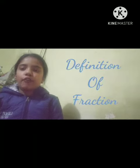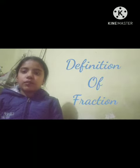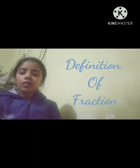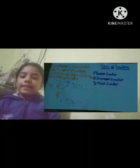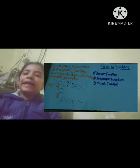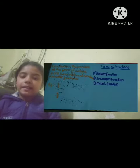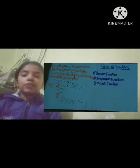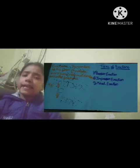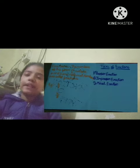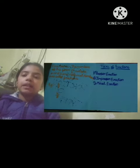First I am going to tell the definition of fractions. The number of the form A by B, where A and B are natural numbers, is called a fraction. A is called the numerator and B is called the denominator.